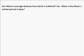This is a problem that uses Newton's version of Kepler's Third Law. Let's start by reading the question. It says our moon's average distance from the Earth is 3.844 times 10 to the 5 kilometers. That's about 384,000 kilometers. And the question is, what is the moon's orbital period in days?